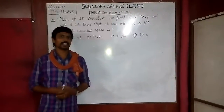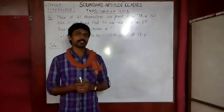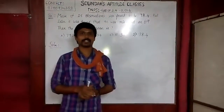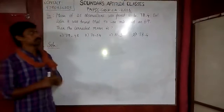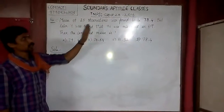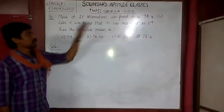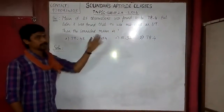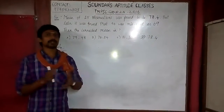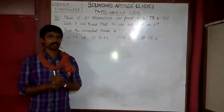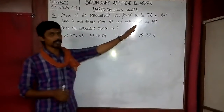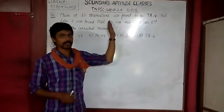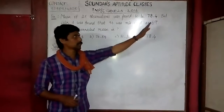TNPC Group 2A, January 2016. The mean of 25 observations was found to be 70.4, but later it was found that the value 96 was misread as 69. The corrected mean is to be found. We are going to add 25 numbers and divide by 25, but the number 96 was mistakenly used as 69.